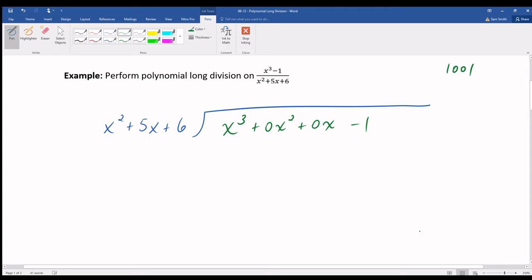So having written down with placeholder zeros the quantity that's being divided and the quantity that's doing the dividing, we're going to begin a little dance now, which I will denote D, M...